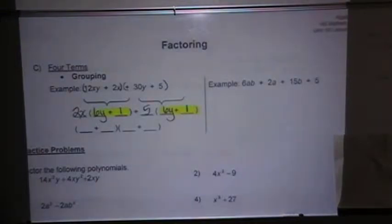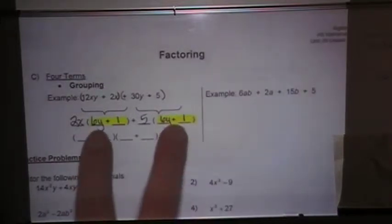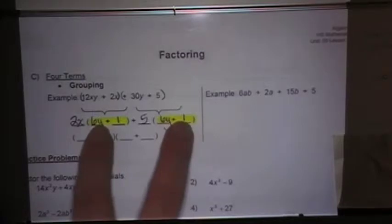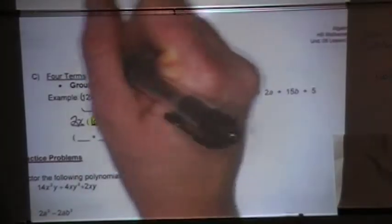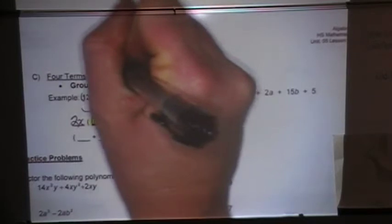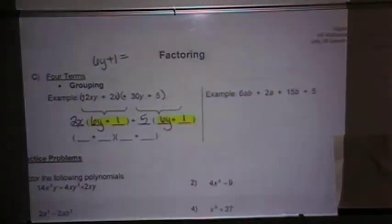So in this case, and in the case of everything we're going to do for today, they're all factorable. So if you get to this point and your binomials don't match, you need to check what you've done. Now, because they match, I'm going to do a little bit of substitution. I'm going to say that 6y plus 1 actually equals a fat w.